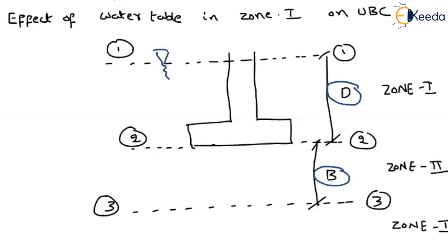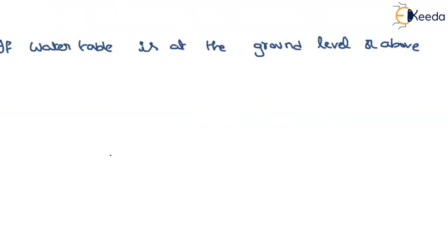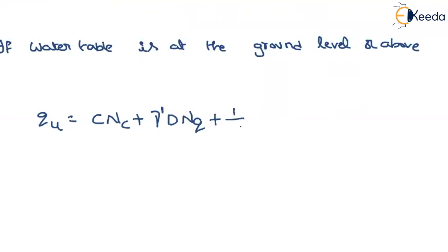So if your water table is at the ground level or above it, your complete depth term and your complete width term are under submerged condition, and we have to use effective parameters. The ultimate bearing capacity equation becomes: q_u = c·Nc + γ'·d·Nq + γ'·b·Nγ — because your complete depth is under submerged condition, you use γ' for the depth term, and since the complete width is also submerged, you use γ' for the width term as well.